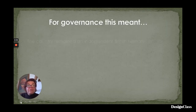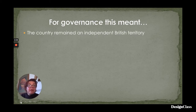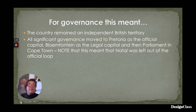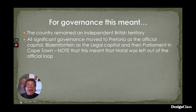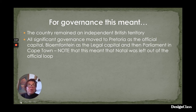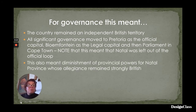This was the Union Buildings in Pretoria, designed by famed architect Sir Herbert Baker. For governance, this meant that the country as a whole remained an independent British territory. All significant governance moved to Pretoria as the official capital, Bloemfontein as the legal capital, and Parliament in Cape Town. Vitally important was that Natal was left out of the official loop, and this also meant diminishment of provincial powers for Natal province. Their allegiance remained strongly British, even though they were now part of this entire national union.